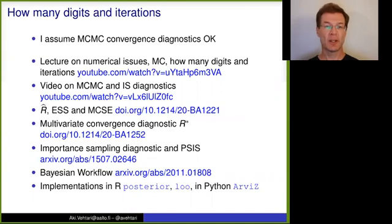Monte Carlo standard error, multivariate convergence diagnostics R-hat, importance sampling diagnostics, and how all these fit overall Bayesian workflow. And we have implementations of our methods in R and Python packages.